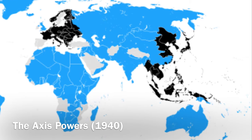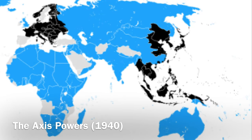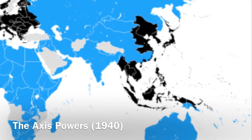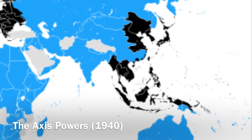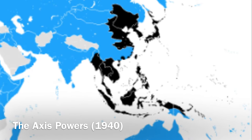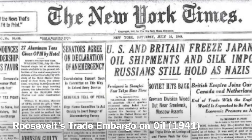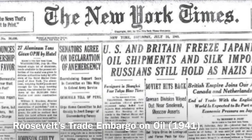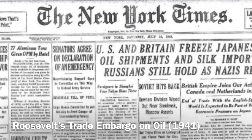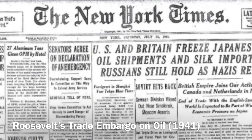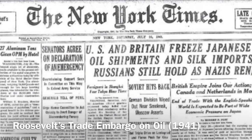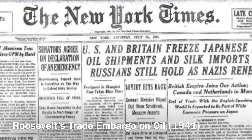Japan then teamed up with Germany and Italy to make the Axis Powers, who valued nationalism, had militaristic governments, and were obsessed with conquest. Since Germany and Italy had already declared war on America, Japan was essentially declaring war on America by joining them. America hurt the Japanese military by restricting some crucial items. And finally, President Roosevelt announced a trade embargo on oil in July 1941, also known as the final straw before the violence between Japan and America commenced.